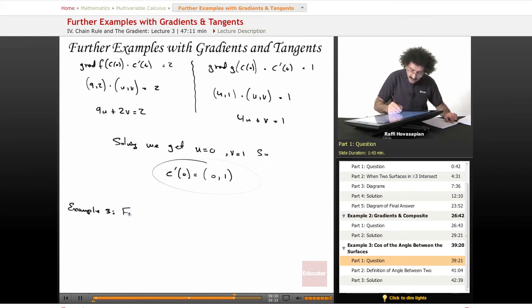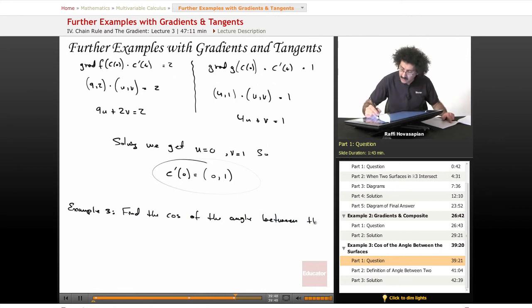This says find the cosine of the angle between the surfaces x squared plus y squared plus z squared equals 38 and x, not x squared, minus z squared.